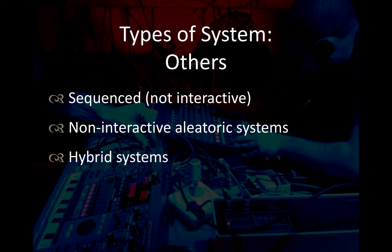Other system types include sequenced response — playing back fixed sections of media — and non-interactive aleatoric systems, which are chance-based systems used to create material that is then fixed for performance. The generativeness happens during composition to create fixed material for playback rather than live. It's also worth noting that most systems end up being hybrid, using a combination of these techniques.